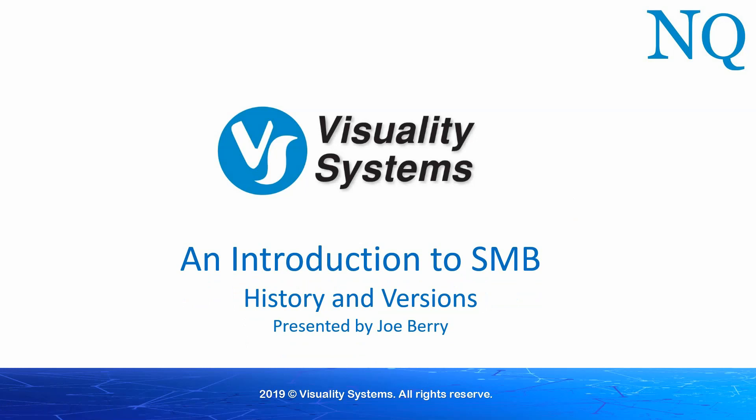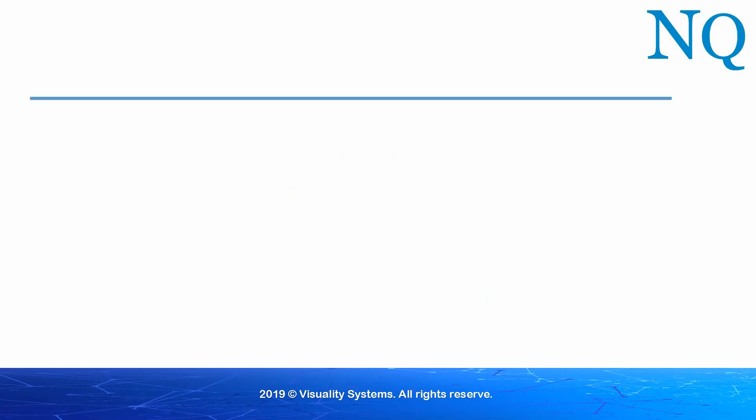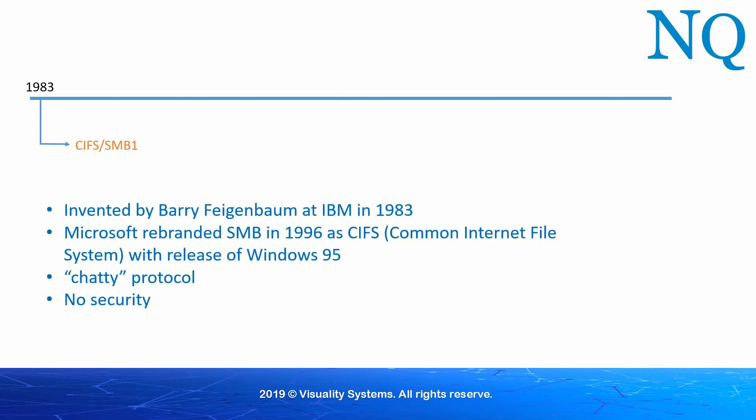The original SMB protocol was invented by Barry Feigenbaum at IBM in 1983 with the aim of creating a networked file system. From there, it was extended by Microsoft and it became known as CIFS, or the Common Internet File System, as well as subsequently being called SMB1.